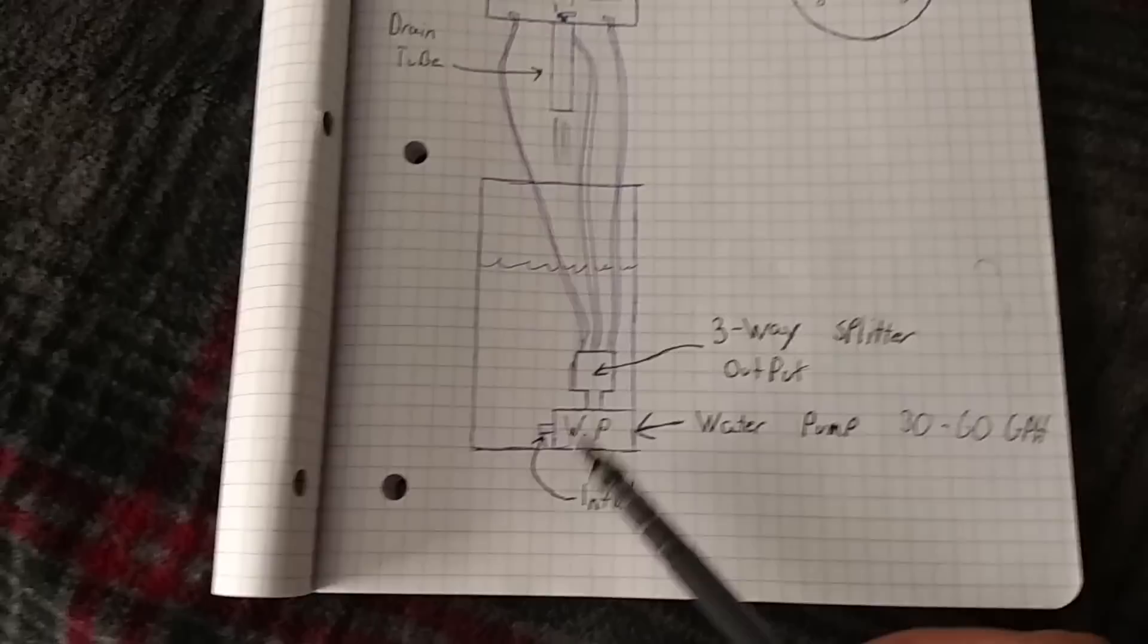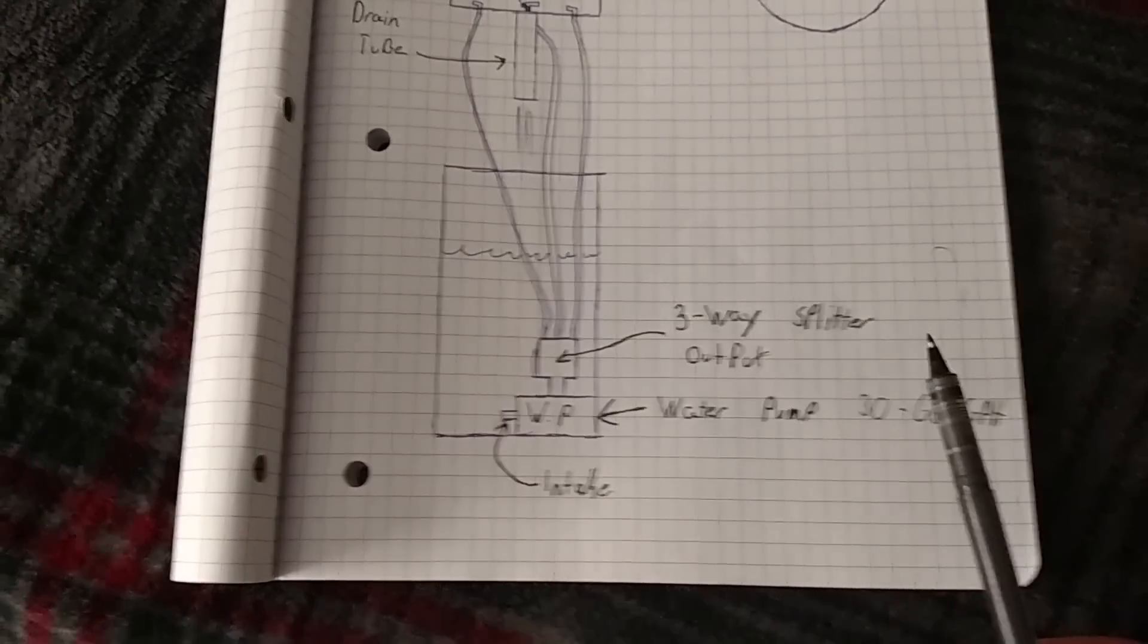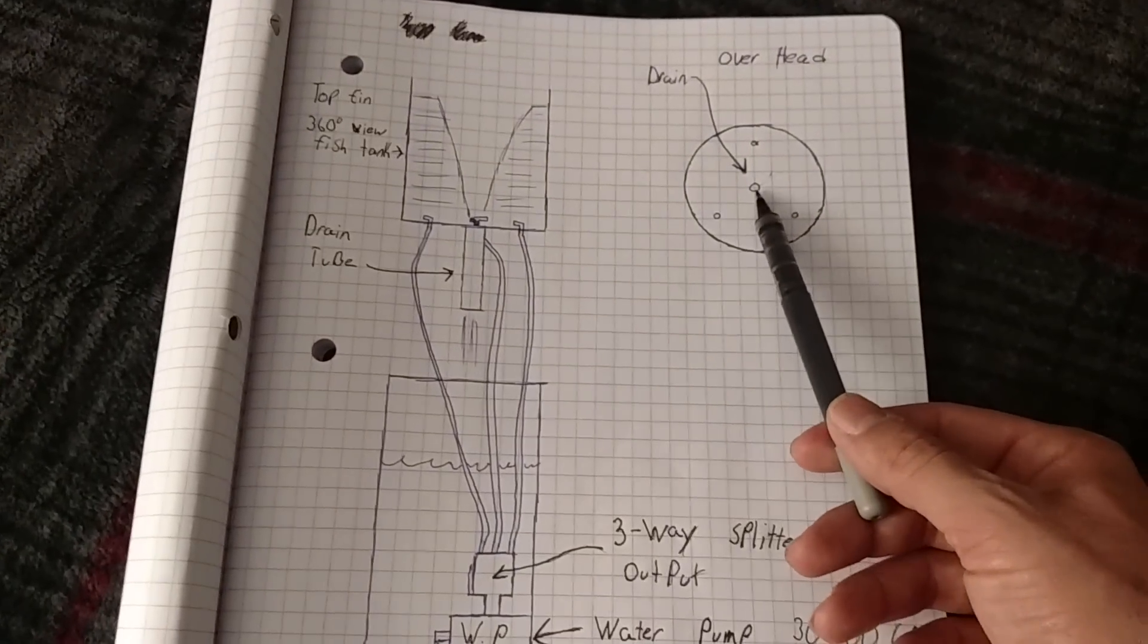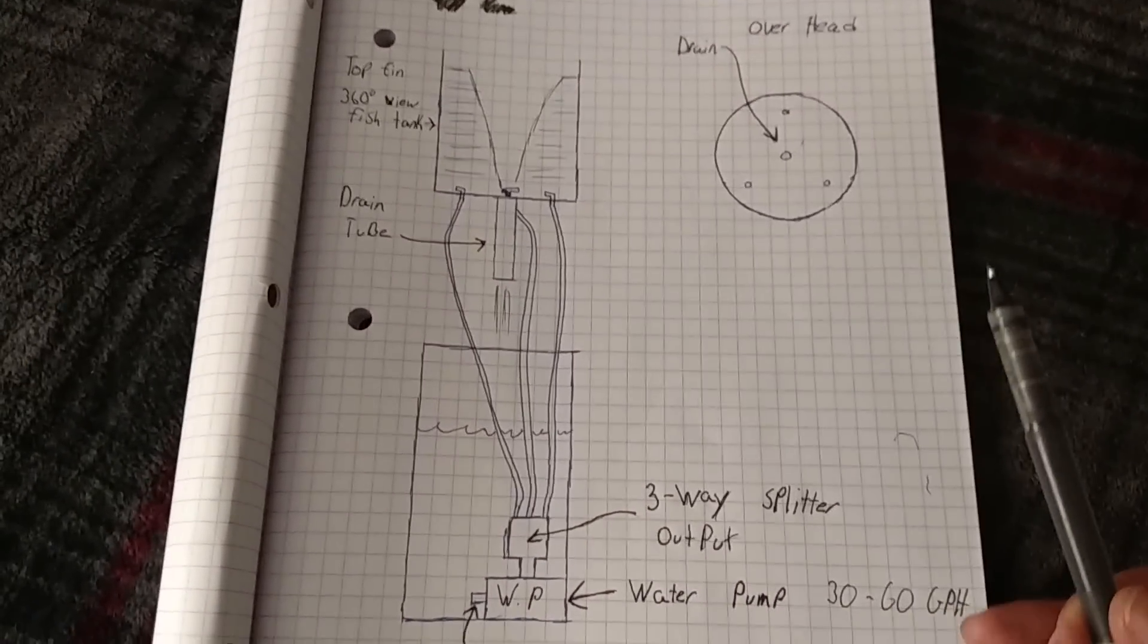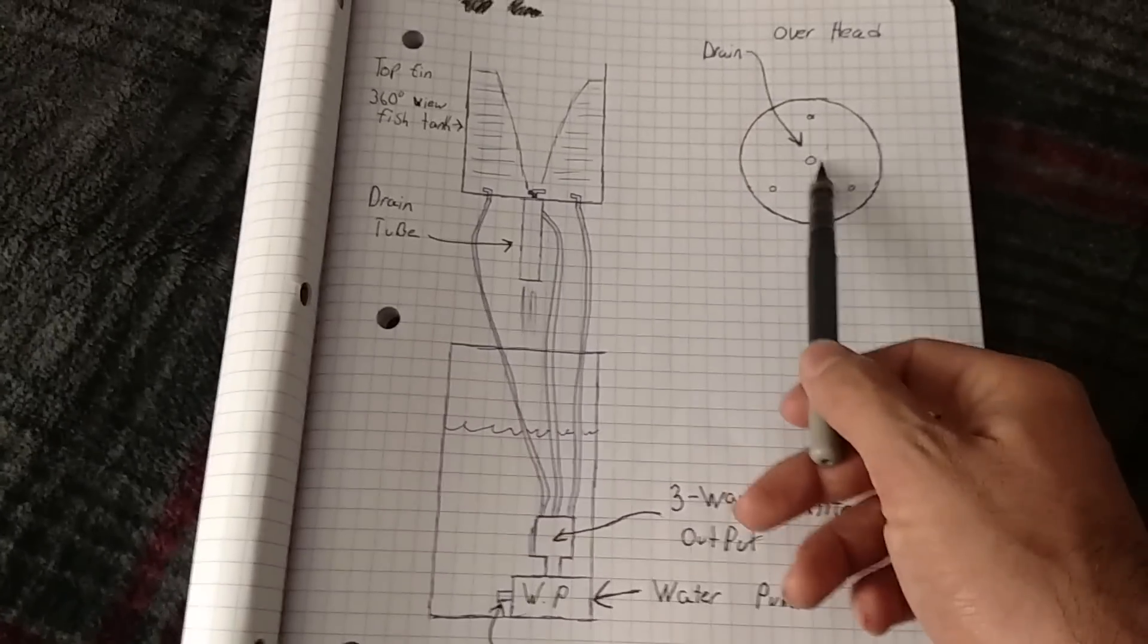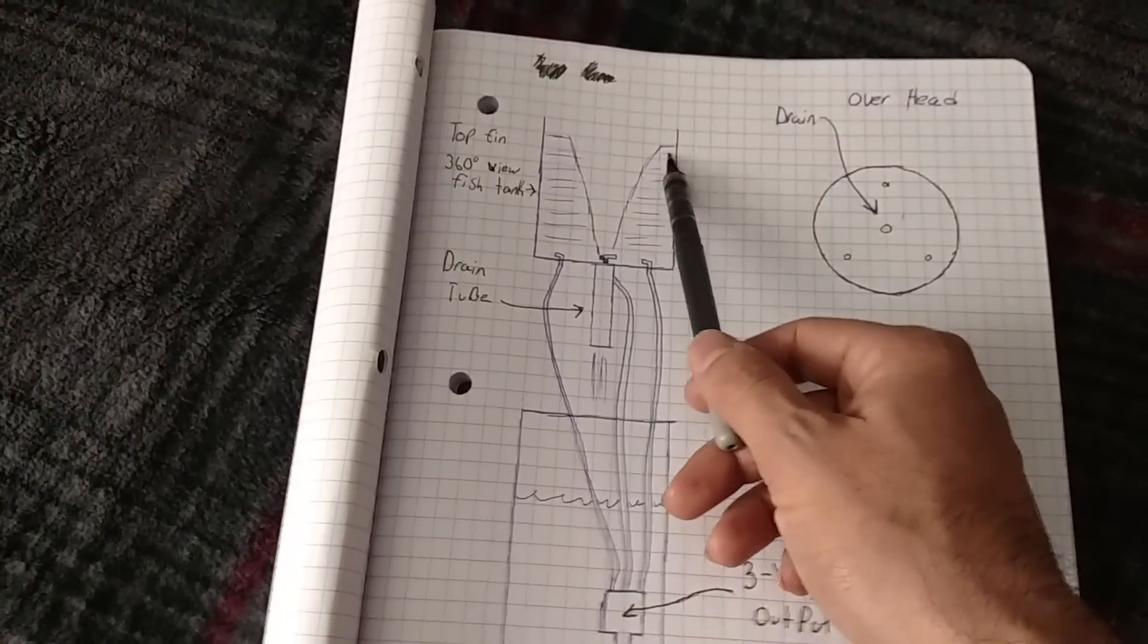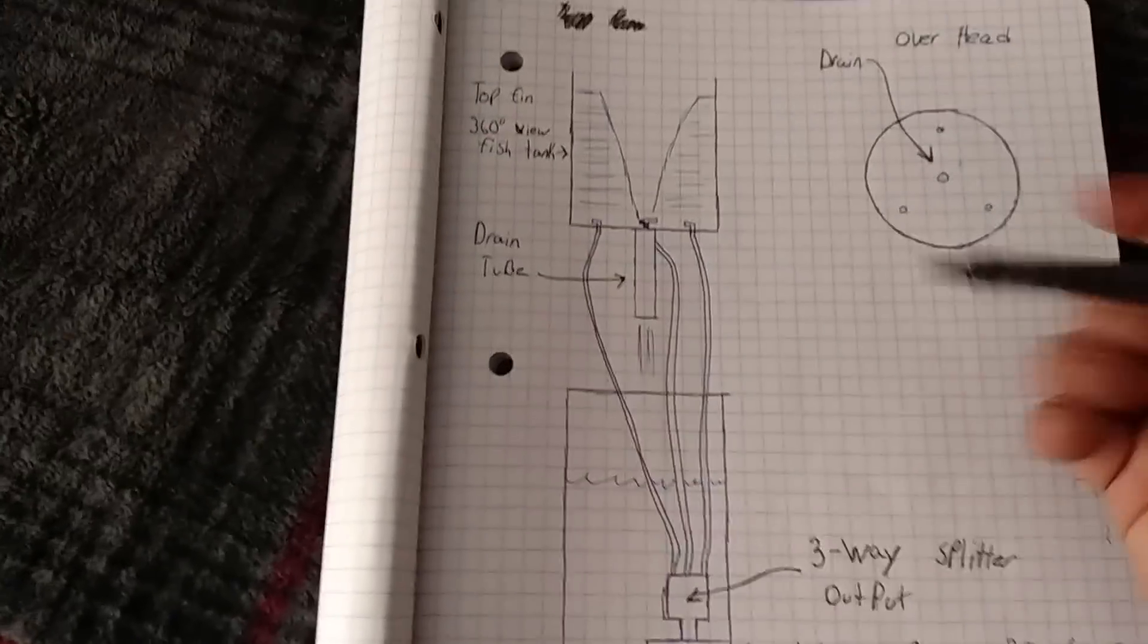The pump - mine is like 60 gallons an hour, something like that. But I have a five-eighths hole here, and whatever pump size you can get, you just vary the hole diameter. You just start out small, see if it overflows, and then just keep bumping up the hole size until you get it to where it wants to sit about an inch from the top.